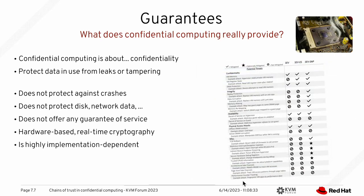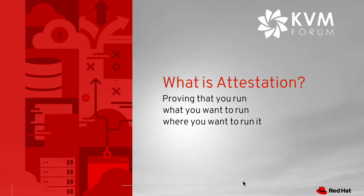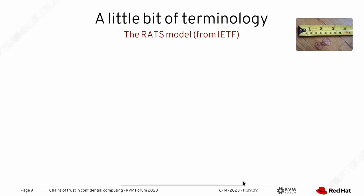These protections are highly implementation-dependent, even within the same vendor. The chart on the right is for AMD devices depending on the generation: SEV, SEV-ES, SEV-SNP. The bottom line is that when you say 'confidential computing,' it doesn't bring automatic security any more than a guardrail protects against accidents. So, what is attestation? In our case, it's proving that you run what you want to run and where you want to run it — those are the two questions we try to prove.